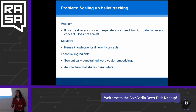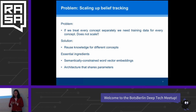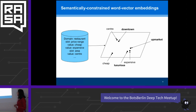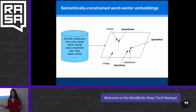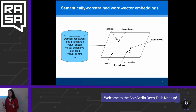The solution to this problem is to reuse knowledge. Humans are extremely good at reusing knowledge — they can sometimes learn from just one single example, whereas deep learning methods need a lot of examples. The key ingredients to reusing knowledge in this case are: first, semantically constrained word vector embeddings, and second, an architecture that shares parameters. An embedding is a vector — a distributed representation of a word — and the idea is that two words that are semantically close should be close in this large vector space.